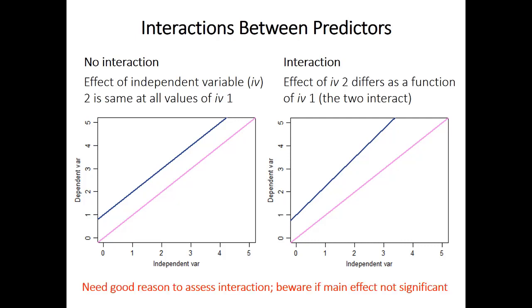Some warnings about interaction terms: you should have good theoretical justification before assessing interactions — why should there be an interaction between these two? Multiple regression has many opportunities for researcher degrees of freedom: you can look at various combinations of independent variables with or without interactions. Be very careful not to hunt for significant effects. Also beware if you find a significant interaction where each variable individually is not significant — this could be valid but requires strong justification.